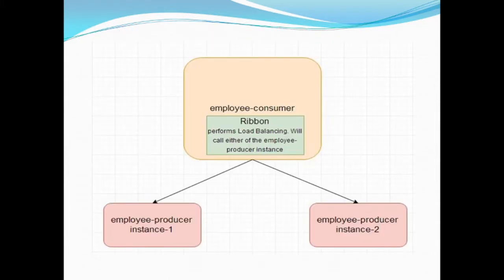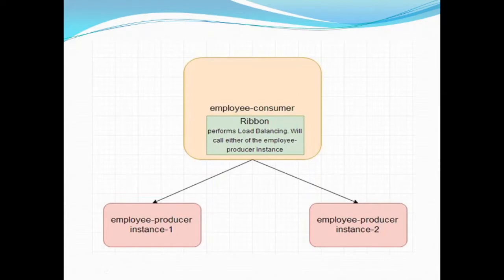In a simple producer-consumer architecture, we start with one producer instance and one consumer instance collaborating together, monitored by the Eureka discovery server. When the load increases for a particular producer application, we balance it using Ribbon. At the consumer side, we need to add a dependency called the load balancer Ribbon.